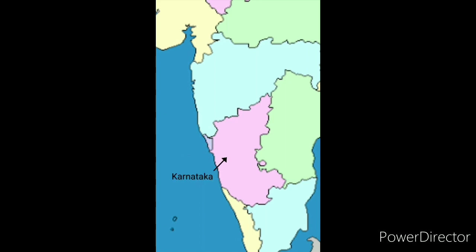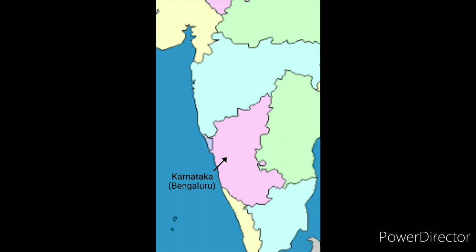Then we have Karnataka and its capital is Bengaluru. Earlier it was known as Bangalore but its name has changed to Bengaluru. Then we have Kerala in the south and its capital is Thiruvananthapuram.